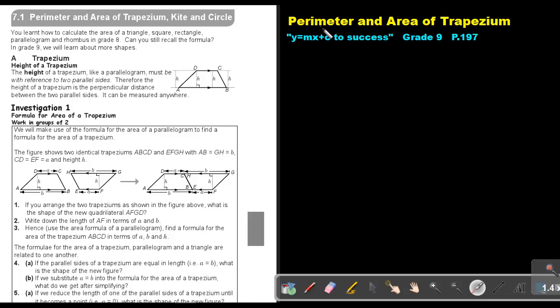Part 1. Perimeter and area of a trapezium. You will find this on page 197 in the Namibia Mathematics Grade 9 textbook Y equals MX plus C to success.